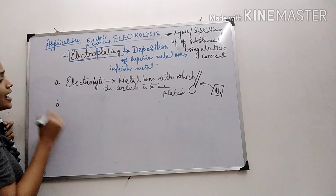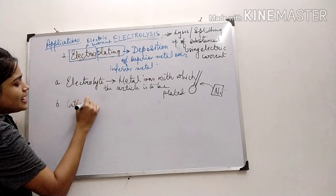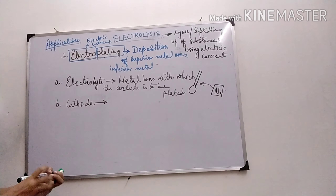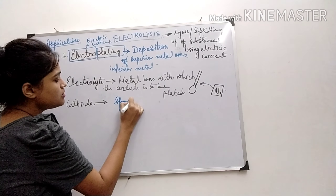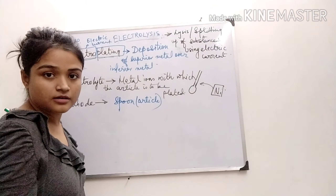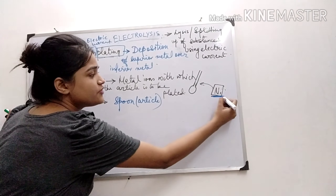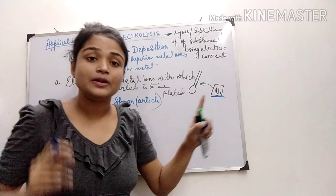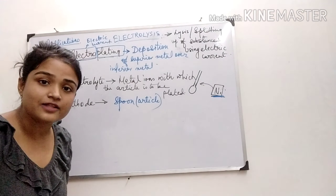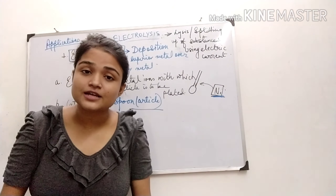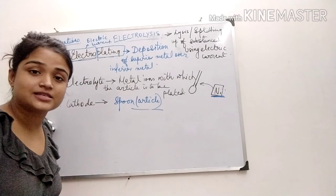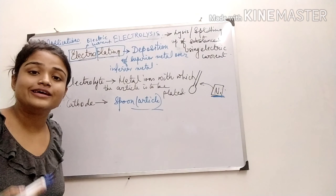Next is the selection of the cathode. The cathode we will use will of course be the spoon — the article which we are going to electroplate. Because the nickel ions will migrate towards the cathode and be deposited on its surface. So if the cathode itself is the article, the metal ions will be deposited on the article. That's why the cathode must be the article which we are electroplating.